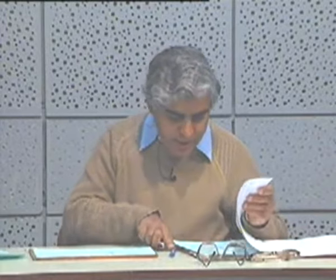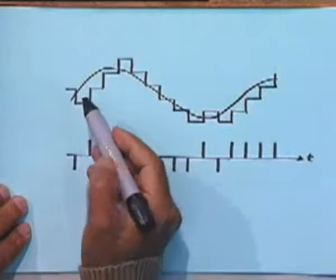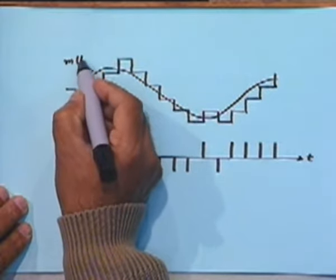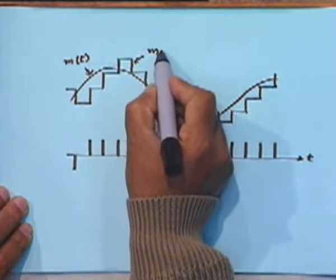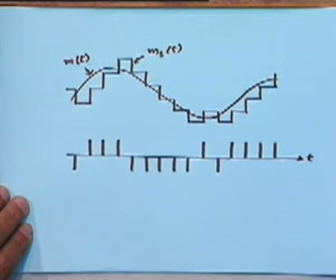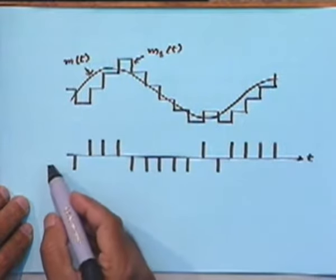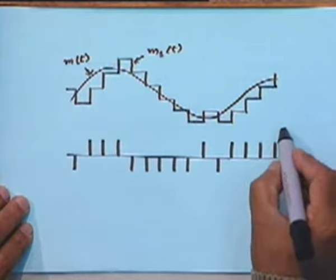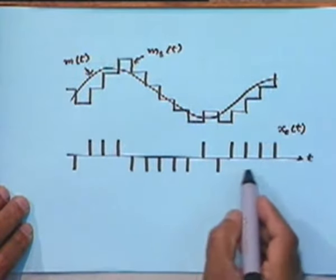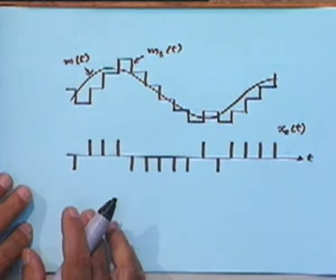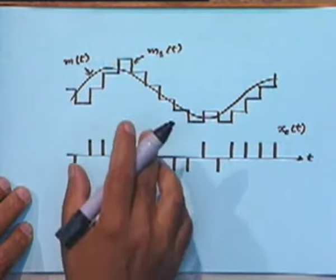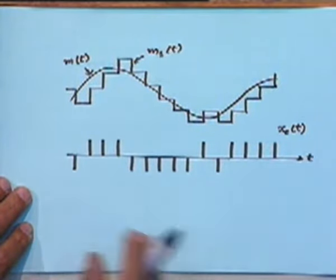Let me illustrate by an example. This is your original message signal m(t), and this staircase waveform that you see is the integrated signal — the reference signal m_s(t). The waveform at the bottom is the output of your delta modulator, x_c(t), a sequence of positive and negative impulses. Let us go through this waveform carefully and see that this behaviour conforms to the block diagram we have discussed.